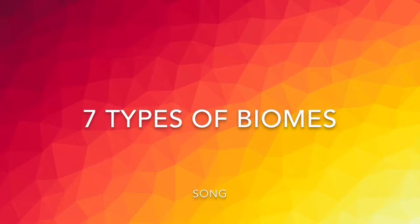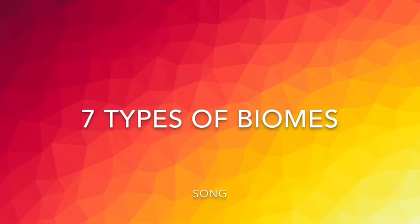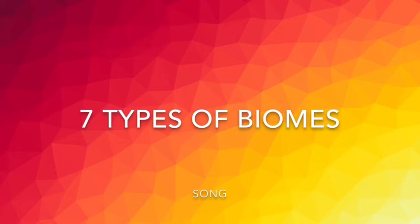Science Cycle 2, Week 1. What are 7 types of biomes? 7 types of biomes are grasslands, deserts, scrublands, tundra, deciduous forests, coniferous forests, tropical rainforests.